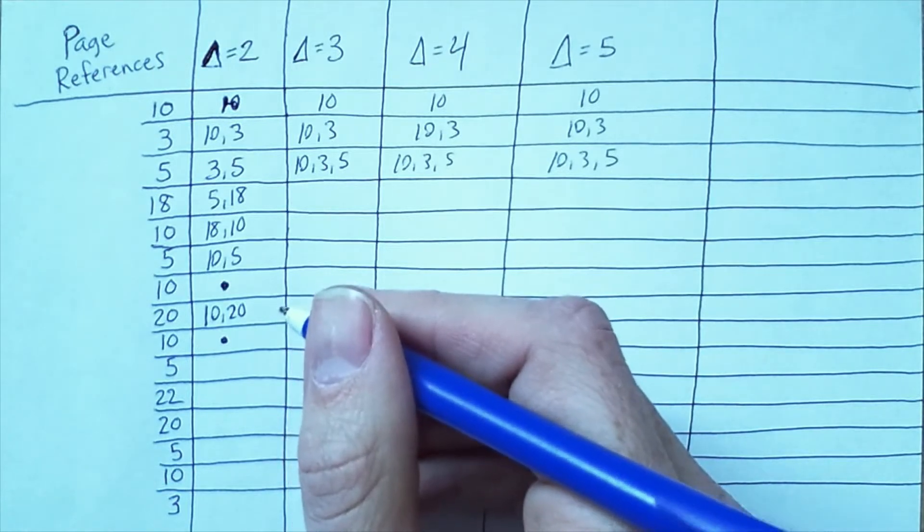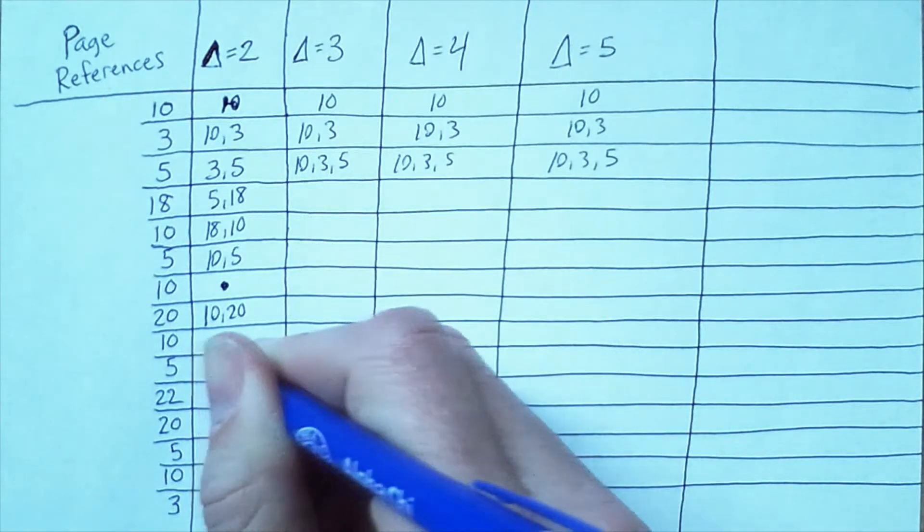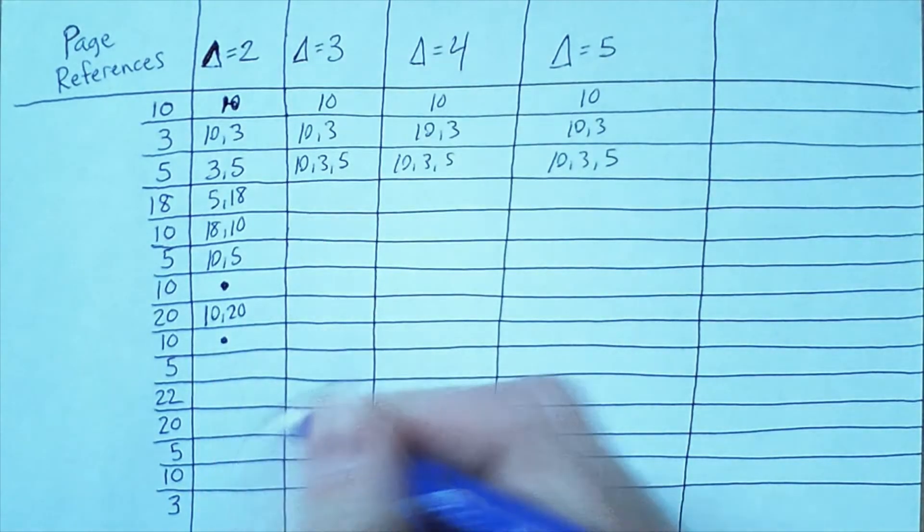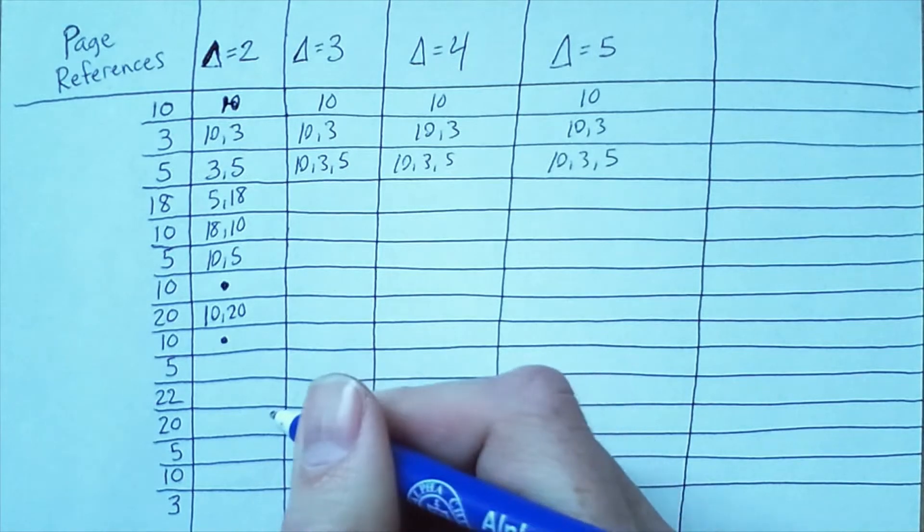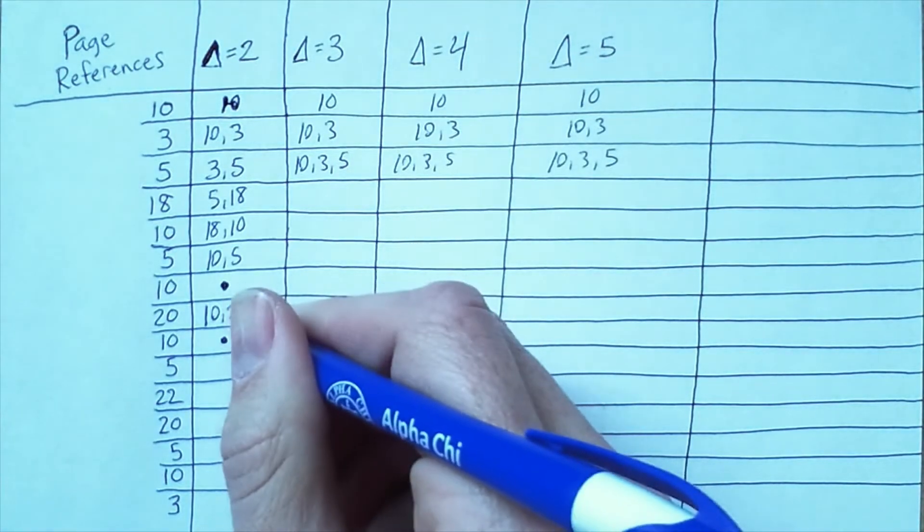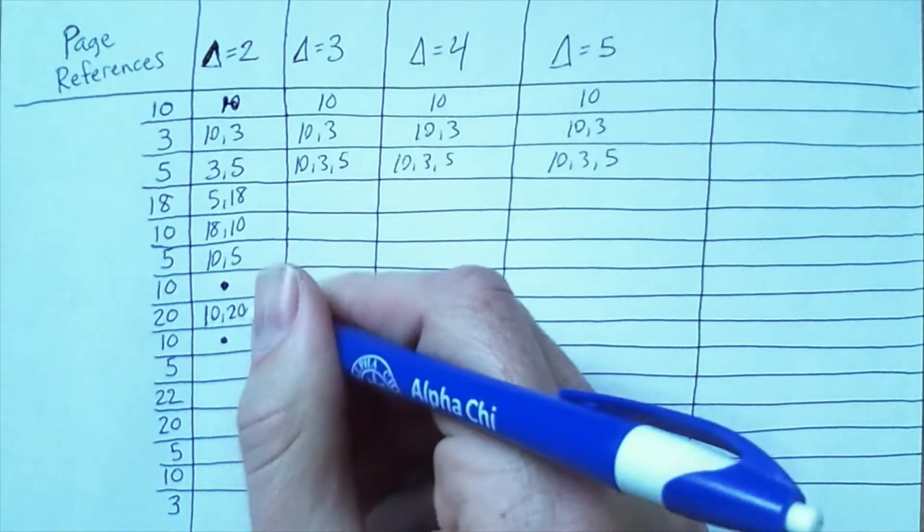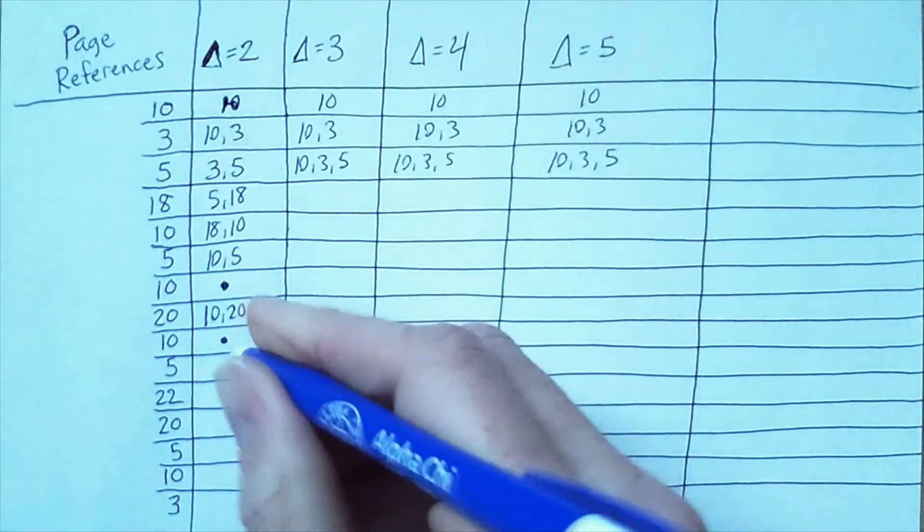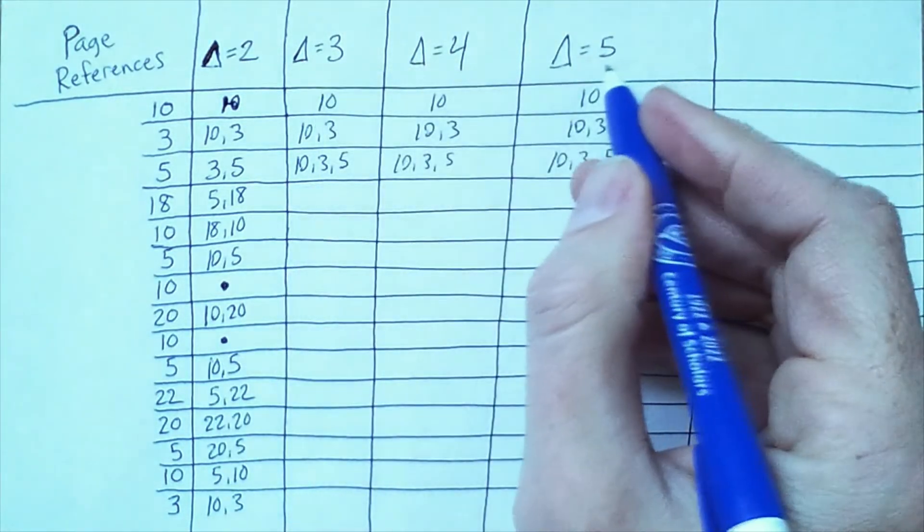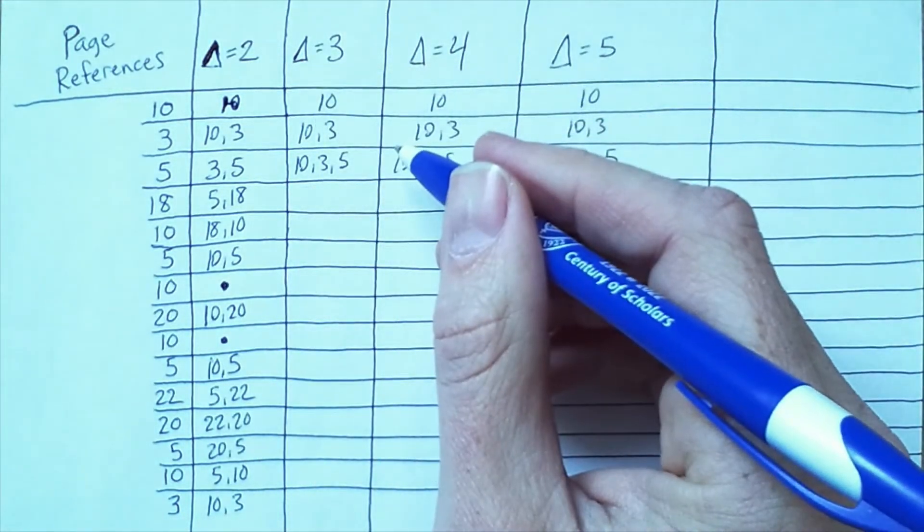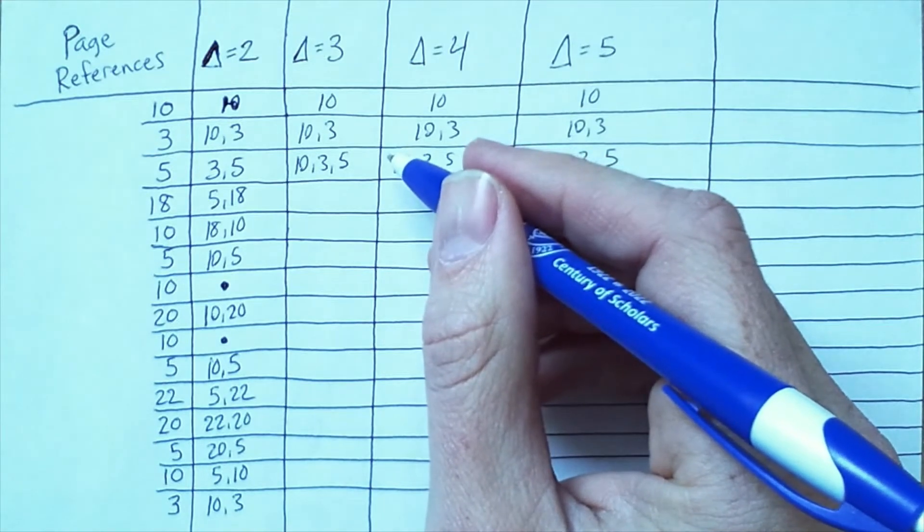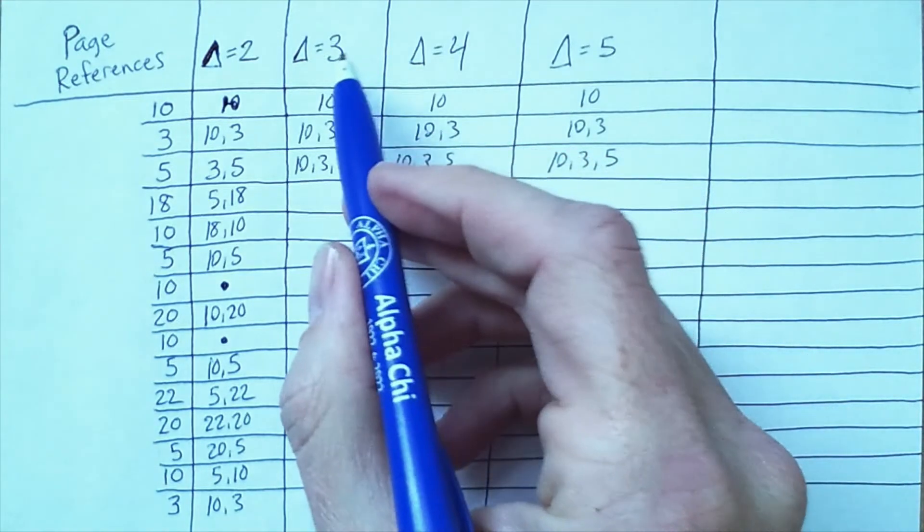And then finally something kind of interesting happens here. We access 10 and then 5 and then 10 again. So at this point the working set is exactly the same as it was on the previous time.